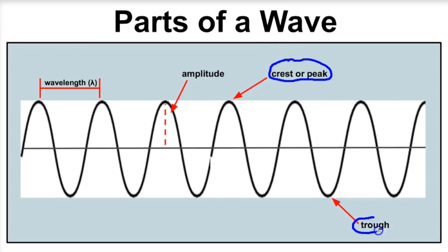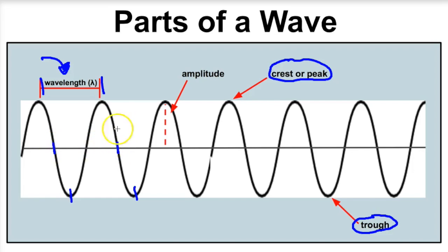The low point of a wave is called the trough. The wavelength of a wave is the distance between two successive peaks, crests, or points on a wave. For example, we can measure wavelength from one point to another successive point. In chemistry, we symbolize wavelength with the Greek letter lambda. Wavelength is the distance between two successive points on a wave.